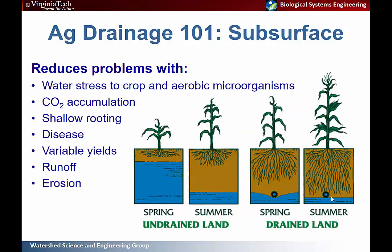Subsurface drainage will reduce problems with water stress to your crop. Under saturated conditions, roots cannot access sufficient oxygen, which produces negative effects on the aerobic microorganisms that facilitate nutrient availability to the crop. As shown in this figure, if you have uncontrolled drainage with a high water table in spring, it can lead to shallow root systems, and when the water table drops in summer the roots won't be sufficiently developed to access the capillary fringe. With subsurface drains implemented, you get better root development and the crop can access the water table throughout the growing season.